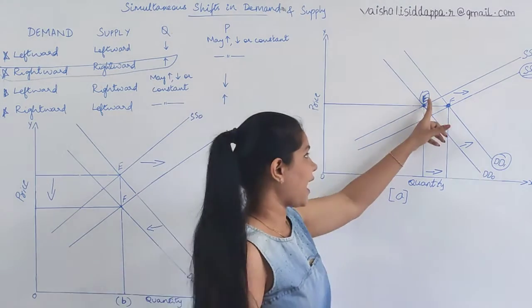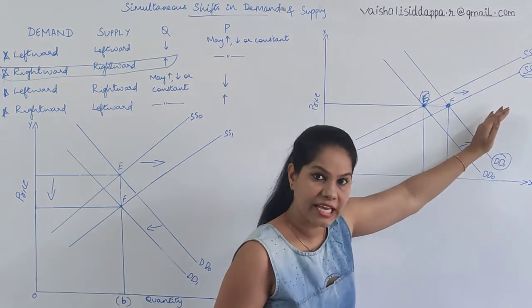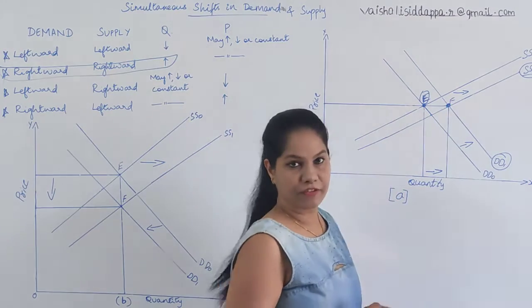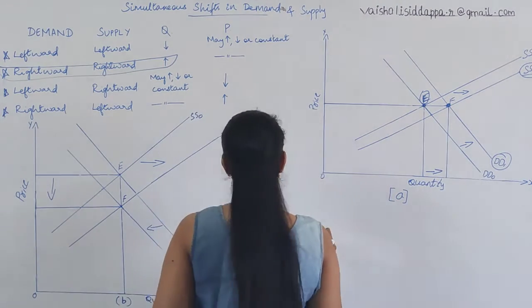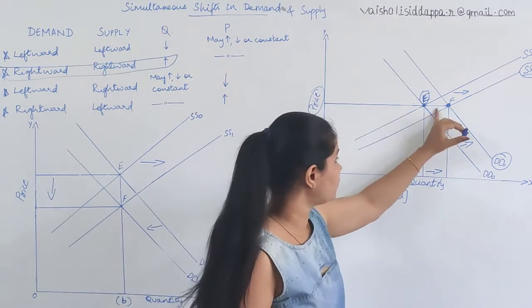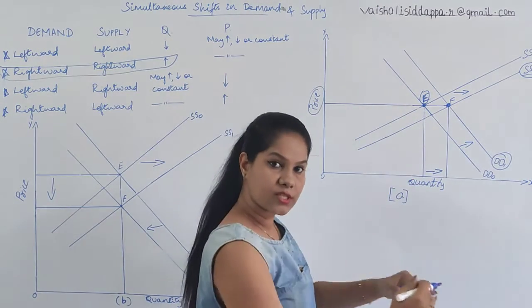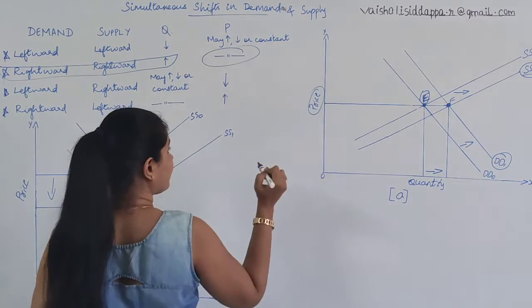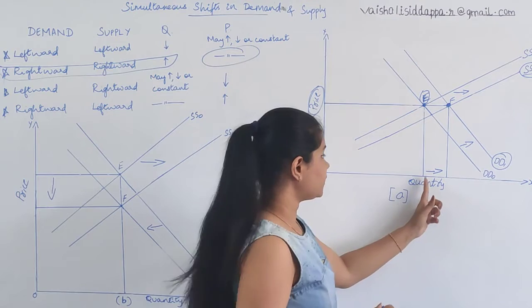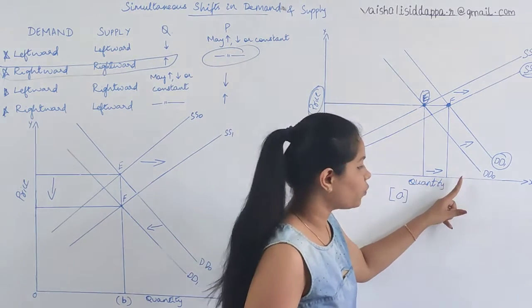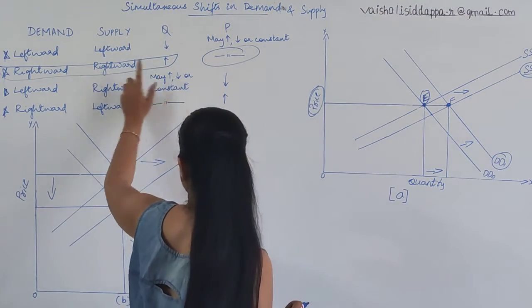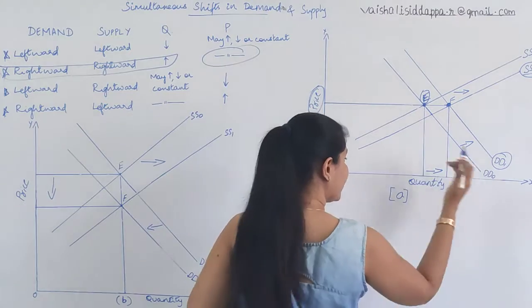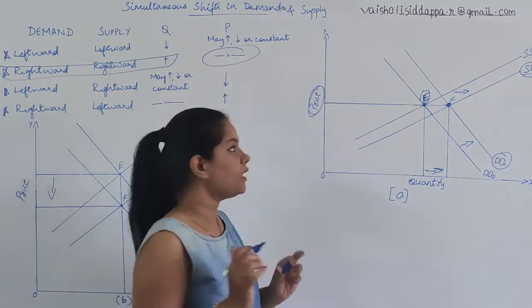At the new equilibrium point F, when demand and supply both shift right, the price is not changing — price is constant. It is not shifting upward or downward; it stays exactly the same. However, quantity is shifting towards the right, meaning quantity is increasing. So when both demand and supply shift right together, price is constant and quantity increases.